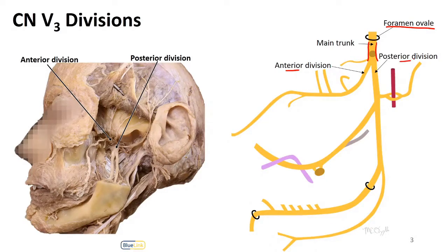In this donor, we can see that the anterior division has been reflected upwards, but its branches are along here, and we can see the posterior division below. The trunk would be further superior in this space, and a little bit difficult to see in this image.